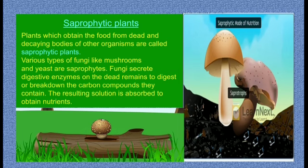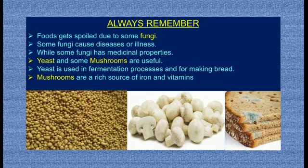Next are saprophytic plants — plants which obtain food from dead and decaying bodies of other organisms are called saprophytic plants. Various types of fungi like mushrooms and yeast are saprophytes. Fungi secrete digestive enzymes on dead remains to digest or break down the carbon compounds they contain; the resulting solution is absorbed to obtain nutrients. Remember: foods get spoiled due to some fungi; some fungi cause diseases, while some fungi have medicinal properties. Yeast is used in fermentation and for making bread. Mushrooms are a rich source of iron and vitamins.